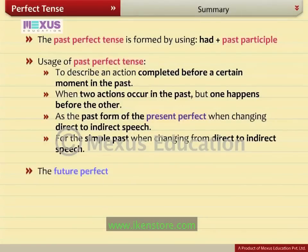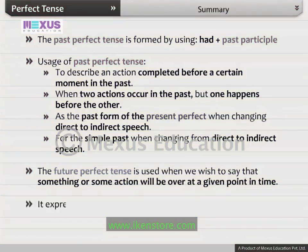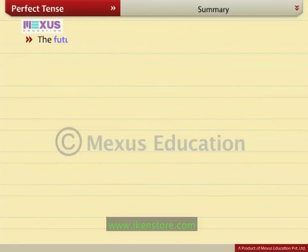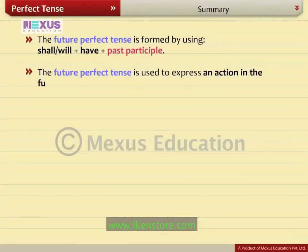The future perfect tense is used when we wish to say that something or some action will be over at a given point in time — to express an action that will be completed before a certain time in the future. It is formed by using shall or will plus have plus past participle. It is also used to express an action in the future before another action in the future.